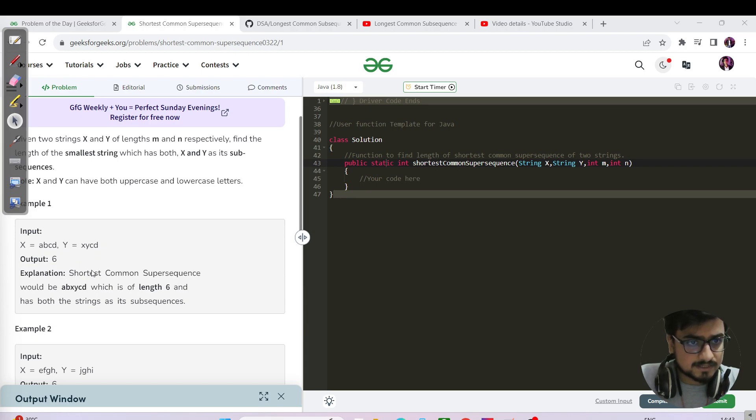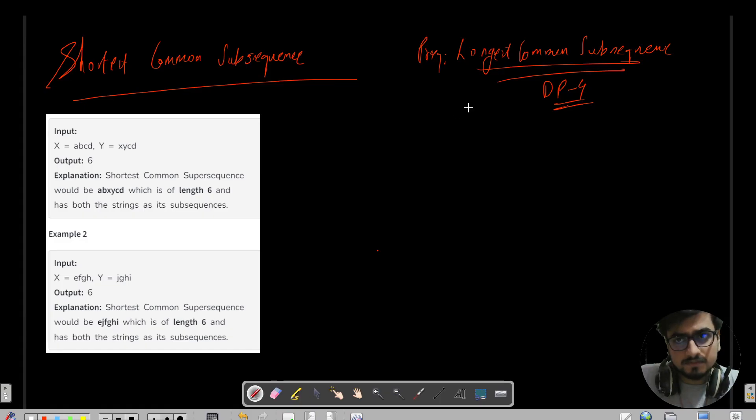For ABCD and XYCD, this is the given output here. This question, I would say, is something key if you're following me from maybe 30 to 40 days past. We have done a question of Longest Common Subsequence which is also present in the DP playlist of the video for right.